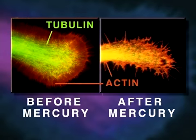Shown here is a neurite growth cone stained specifically for tubulin and actin, before and after mercury exposure. Note that the mercury has caused disintegration of tubulin microtubule structure.